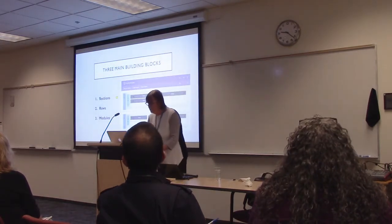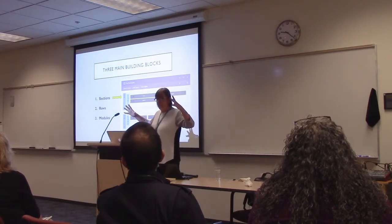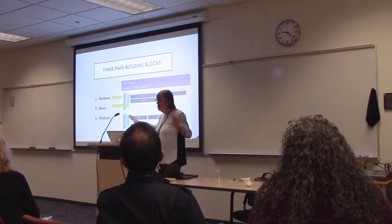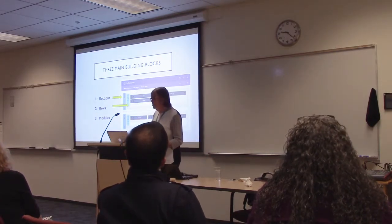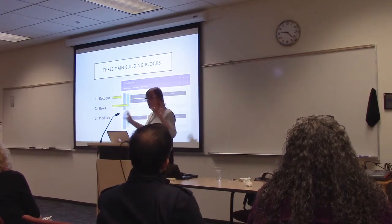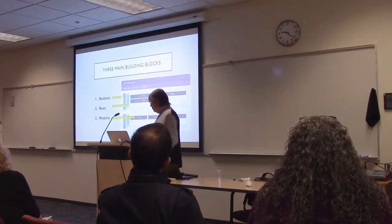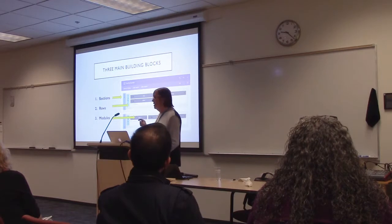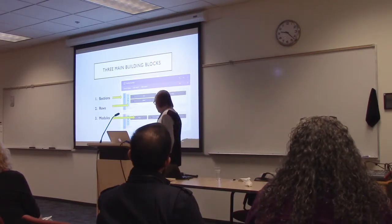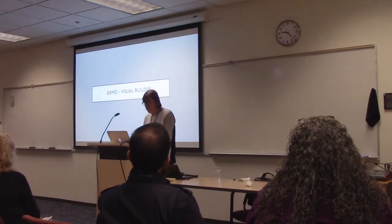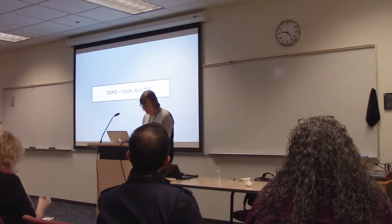It starts with sections — sections are the largest container, that's where everything goes inside. Inside the section you determine the number of rows — you can have as many rows as you want. That's when you determine: is this going to be a three column, four, two, or one? And then inside the row are the modules — those are the elements that contain things like forms, images, and text. You can have as many modules as you want inside a row.